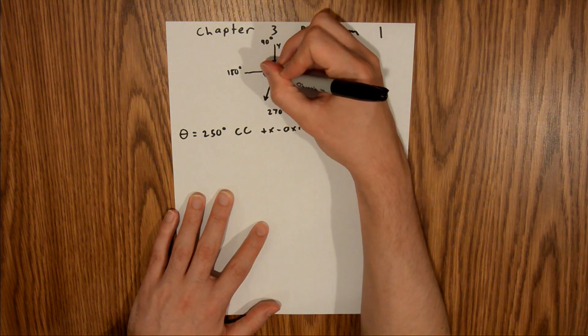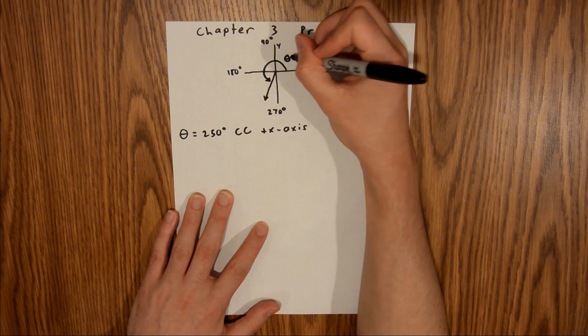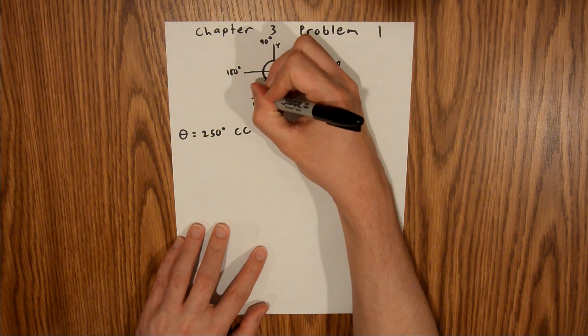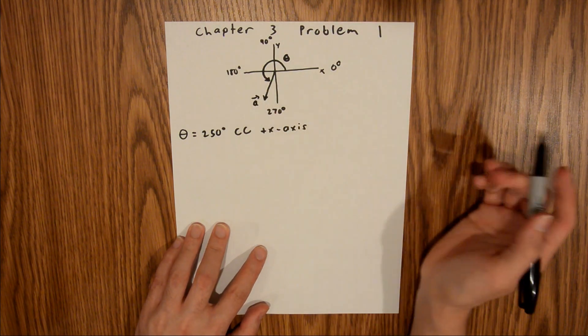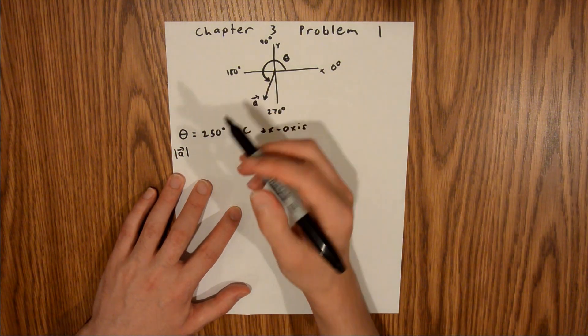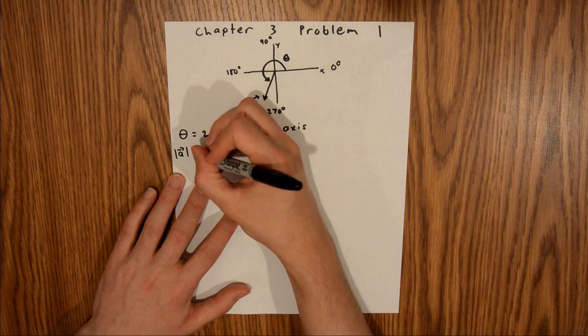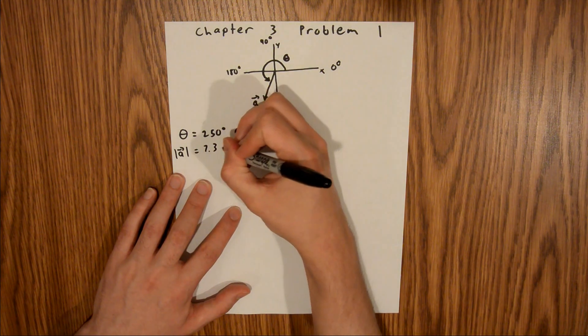And then we have this right here. And that arrow right there signifies theta. We'll call this a. The arrow on top just means this is a vector. And the magnitude of a, the magnitude is signified by the bars on either side, kind of like an absolute value bar. And we're told that is equal to 7.3 meters.